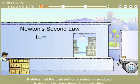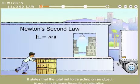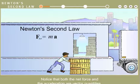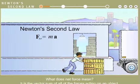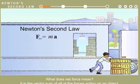Newton's second law gives us the answer. It states that the total net force acting on an object is equal to its mass times its acceleration. Notice that both the net force and the acceleration are vector quantities. What does net force mean? It is the vector sum of all the forces acting on an object.